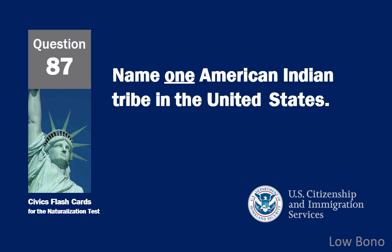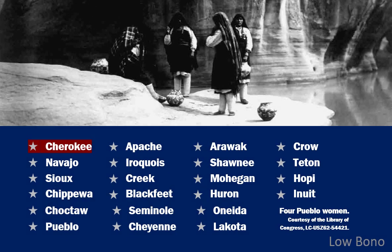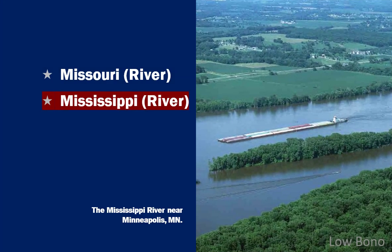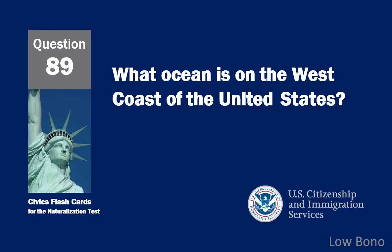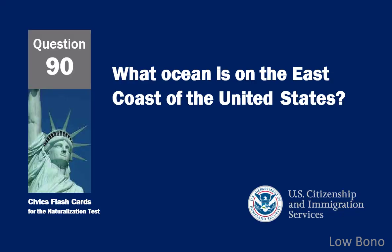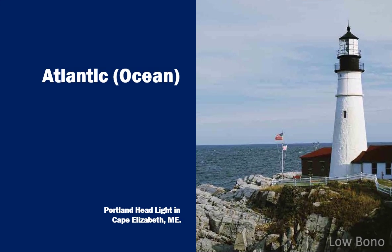Name one American Indian tribe in the United States. Cherokee. Name one of the two longest rivers in the United States. The Mississippi River. What ocean is on the west coast of the United States? The Pacific Ocean. What ocean is on the east coast of the United States? The Atlantic Ocean.